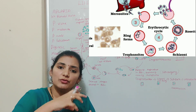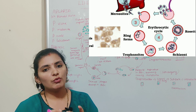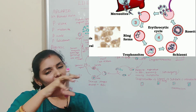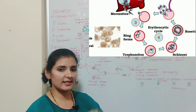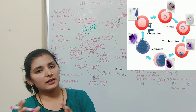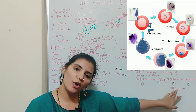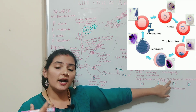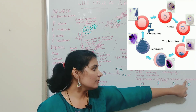The parasites feed on the contents of the RBC, and soon the vacuole disappears. As a result, the parasites fill the full interior of the RBC, and the parasite is now called a schizont. The cytoplasm of the schizont contains a brown color pigment known as hemozoin, which is formed from the hemoglobin of the RBC. The schizont then undergoes asexual reproduction known as schizogony to produce merozoites.